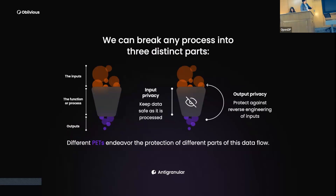Within anti-granular, we focus on privacy enhancing technologies. We focus on privatizing all the parts of the funnel that make up a process. For this, we have two kinds of privacy: input privacy, so that the data is kept safe as it is processed, and output privacy, to protect against the reverse engineering of inputs.